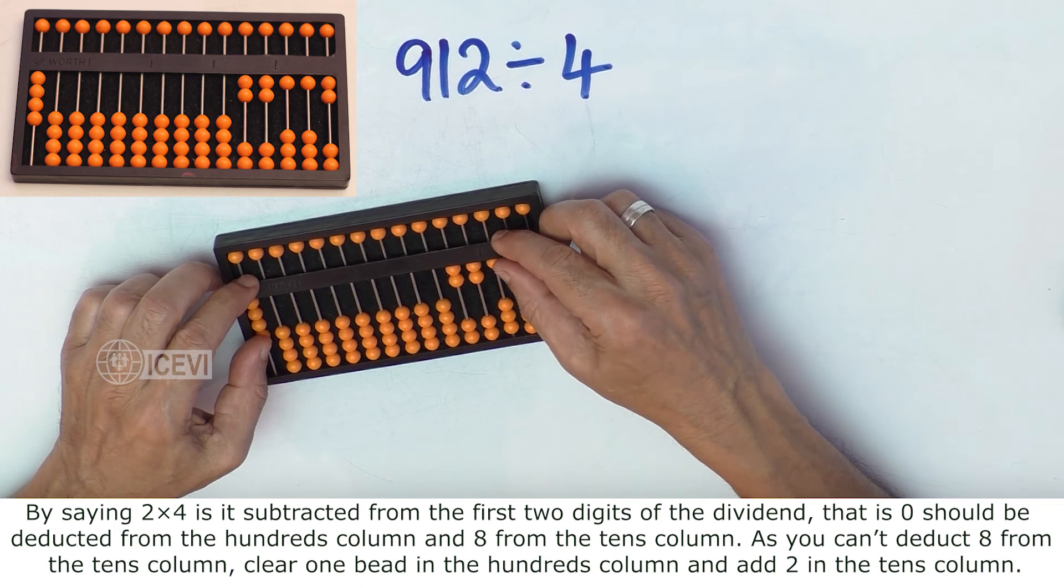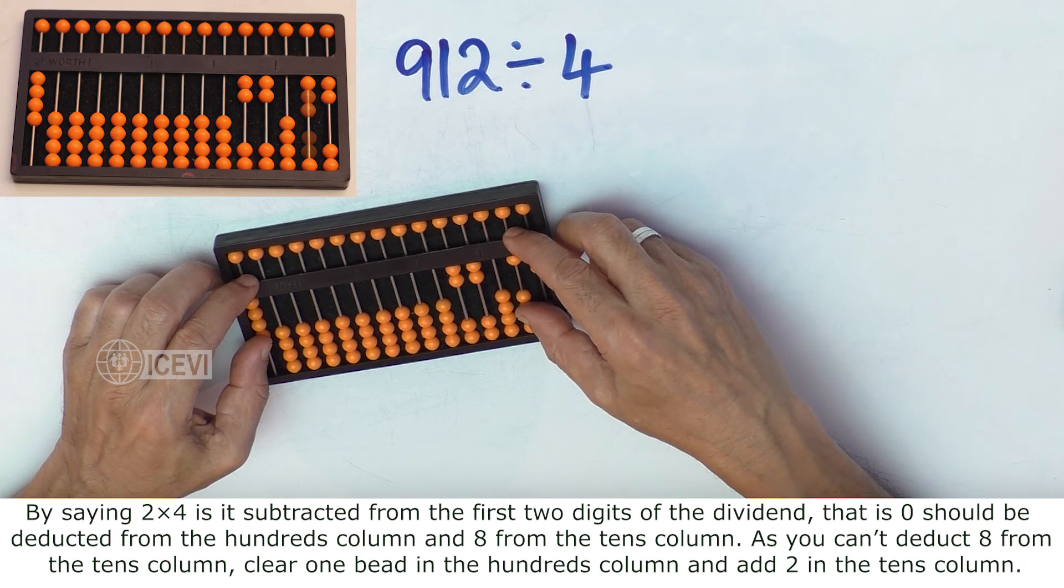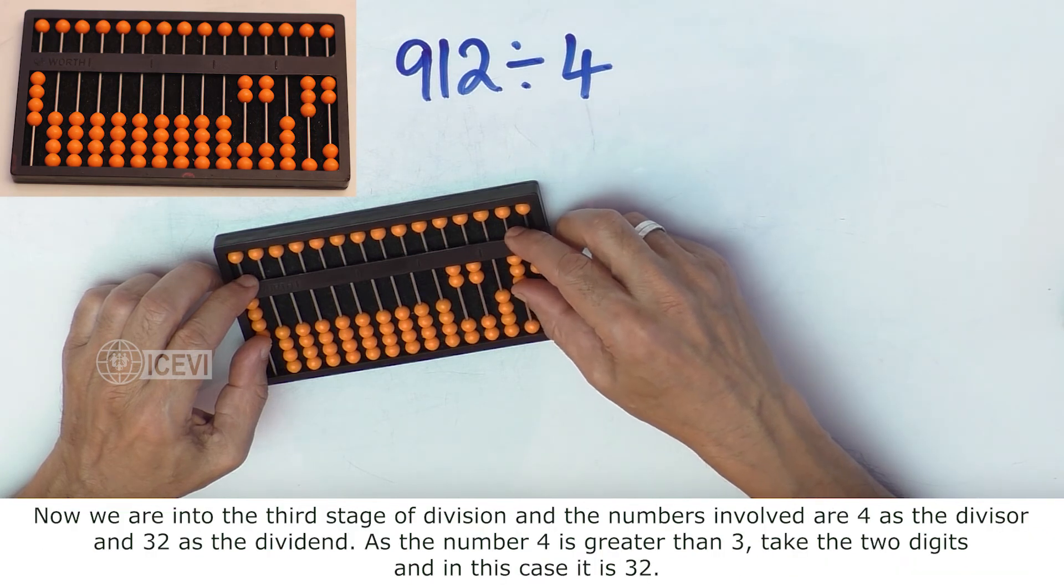As you can't deduct 8 from the tens column, clear 1 bead in the hundreds column and add 2 in the tens column.